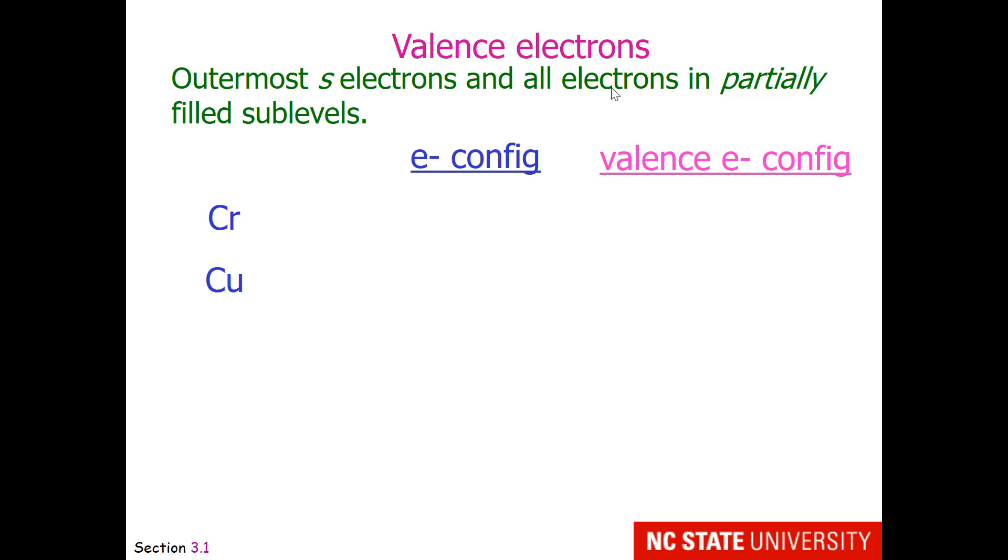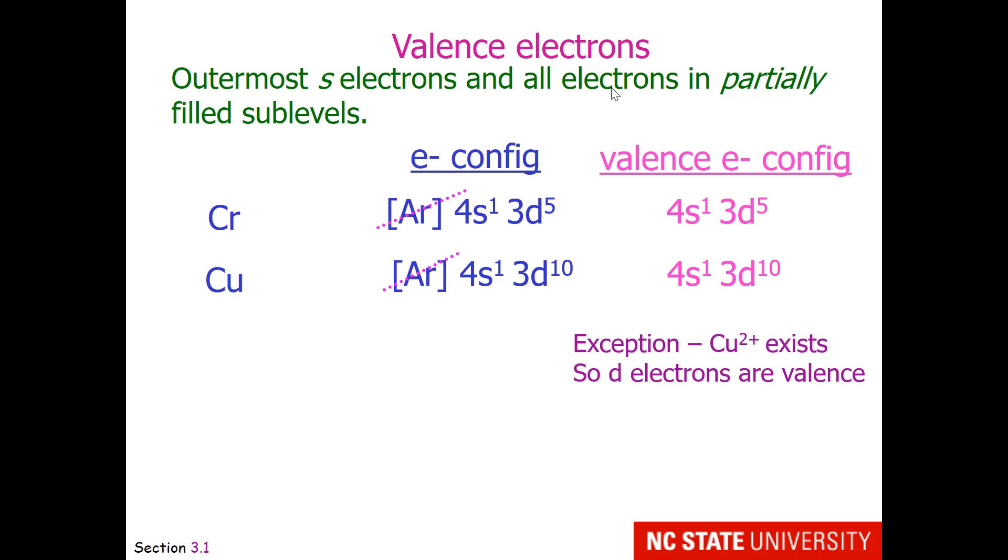What about those irregular elements in the 3d block? The definition is still the same. If we look at chromium, the full electron configuration is argon, 4s1, 3d5. If we lose the argon core, chromium behaves as if it has 6 valence electrons in the configuration, 4s1, 3d5. Shown here is copper's full electron configuration. Now I know for zinc, the 3d10 was dropped because it is a filled sublevel. However copper is rather unique. It has oxidation states of either plus 1 or plus 2. So its valence electron configuration retains the 3d10. I am not planning to test you on irregular electron configurations or valence configurations, but I do want you to be aware of these things as you may encounter them in homework and in other science that you perform.